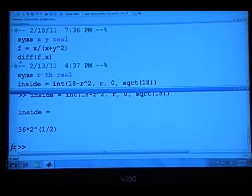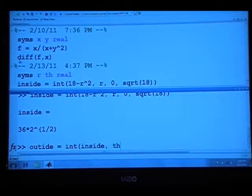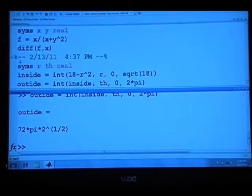Now the outside integral, which is our final answer in this case, is equal to INT. The integrand is the inside integral. The variable of integration is theta. And theta goes from 0 to 2 times pi. So we have 72 times pi times the square root of 2 as our answer.